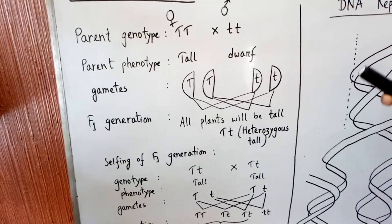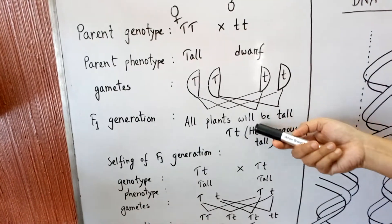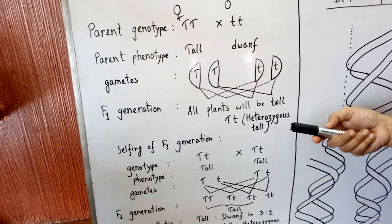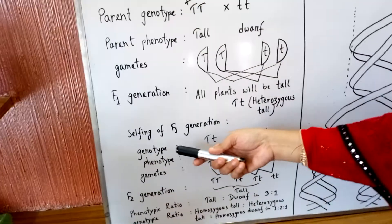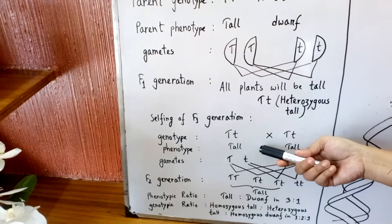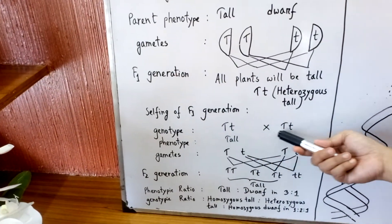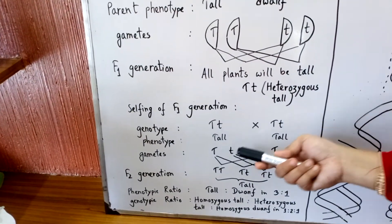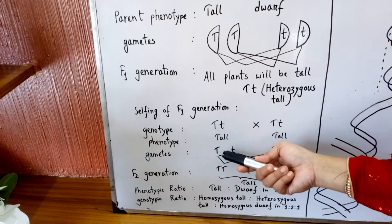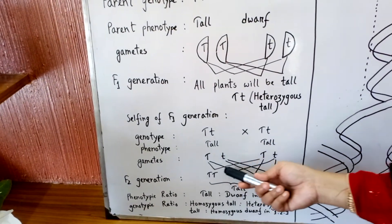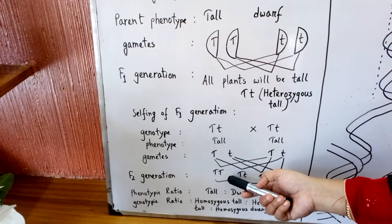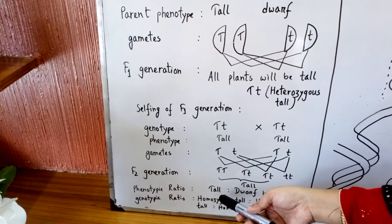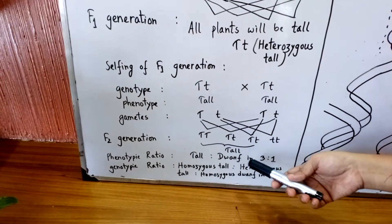Mendel wanted to know whether the dwarf-containing gene is still present in these tall plants. So selfing of the F1 generation was done. The genotype is heterozygous tall crossed with heterozygous tall. In the gametes, two types are produced — one is capital T and another is small t. When F2 generation is formed, it is seen that we get tall to dwarf plants in a 3 to 1 ratio.